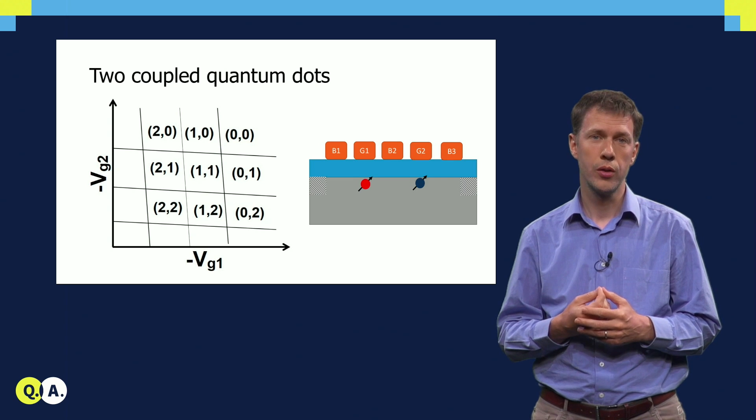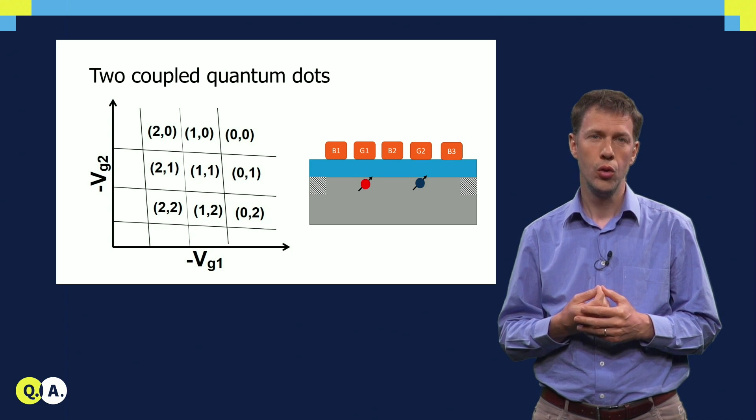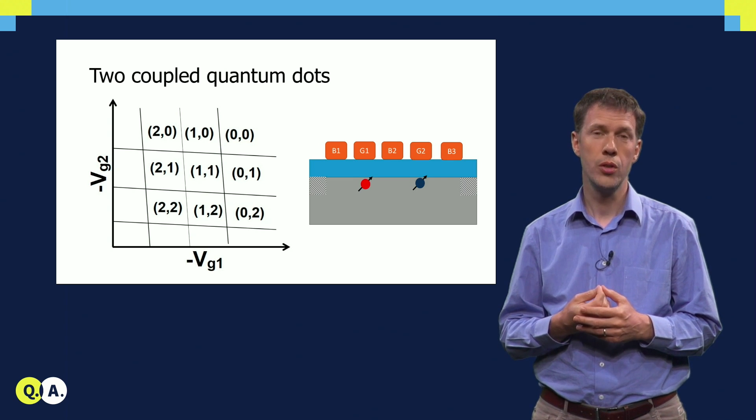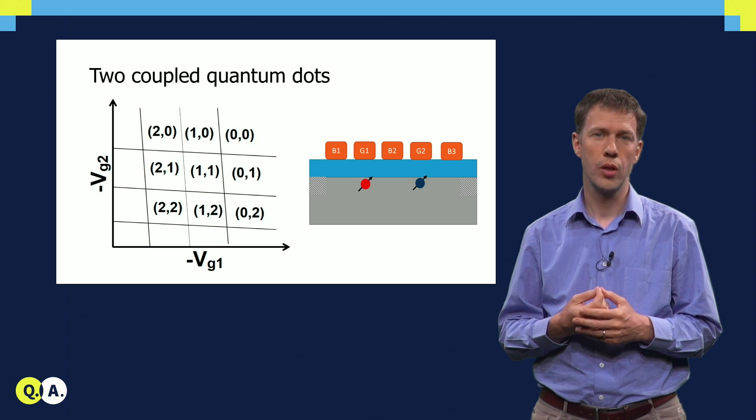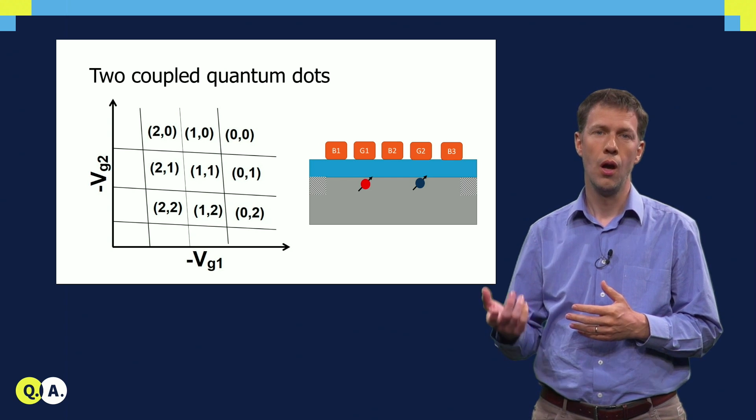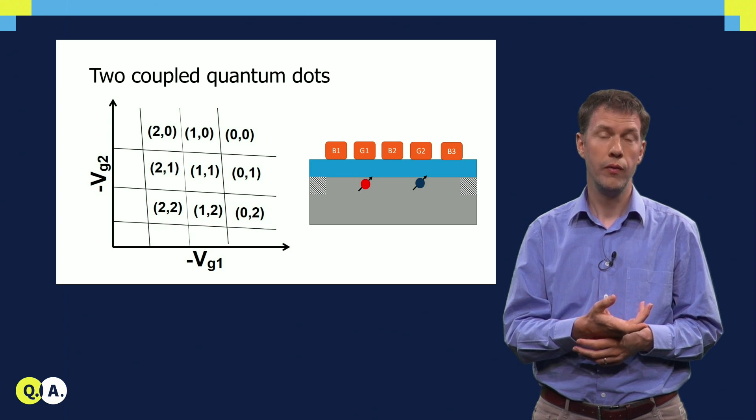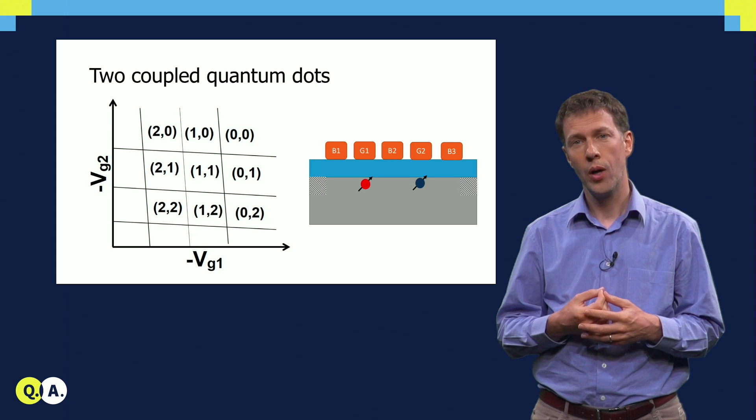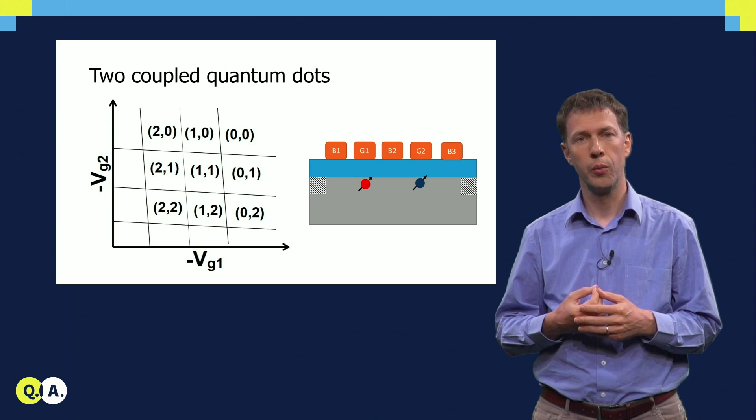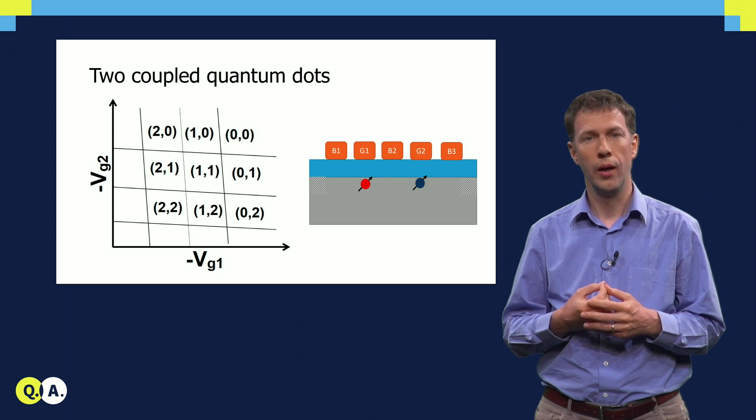If we now consider two quantum dots in each other's vicinity, two effects will happen. The first is crosstalk. The voltage applied to the first gate electrode also affects the potential of the second quantum dot, which sits to its sides, and vice versa. That's why the lines that were vertical and horizontal before are now aligned at an angle.